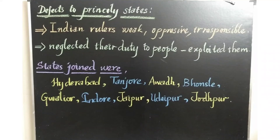What were the defaults to the princely states? The Subsidiary Alliance made the Indian rulers weak, oppressive, and irresponsible — they never worried about their subjects. A king should be worried about his people; he must take care of their welfare and never exploit them. But here, the rulers were exploiting the people, snatching money and imposing heavy taxes. Protected by the British arms, they neglected their duty to develop their kingdoms and help the people economically.